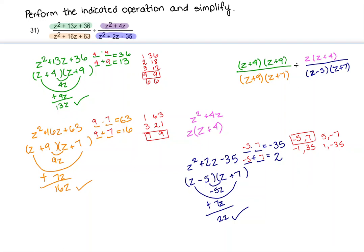Now you have the option of simplifying the fractions individually. From the first fraction, we have a factor of (z + 9) in both the numerator and the denominator, so those cancel out. On the second fraction, we can't cancel out anything. Note that you can't simplify diagonally right now, because this is a division symbol, not a multiplication symbol.